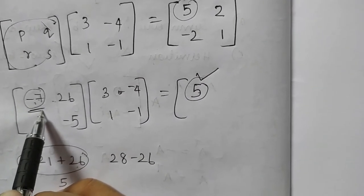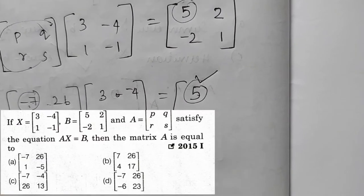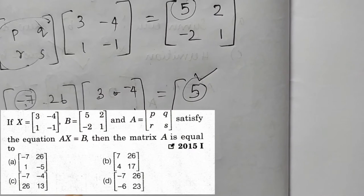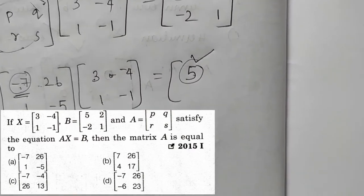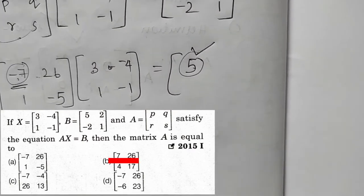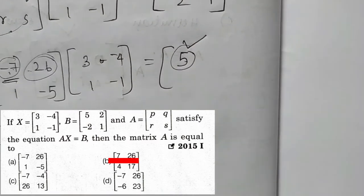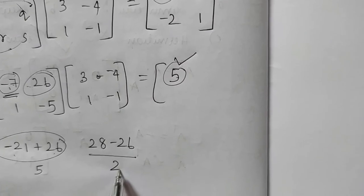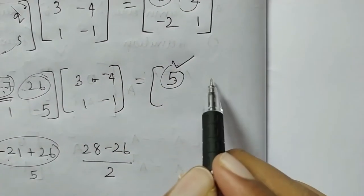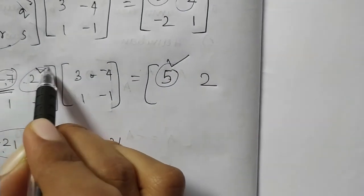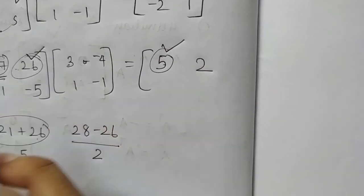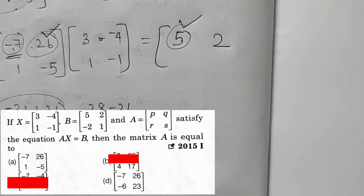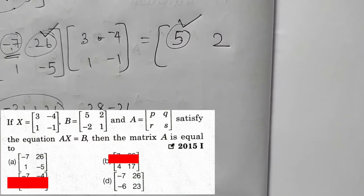Using options: we have minus 7 as the first element, so we cancel option B. Checking the next element: 28 minus 26 equals 2. That gives us the second element as 2, leaving options A and D.